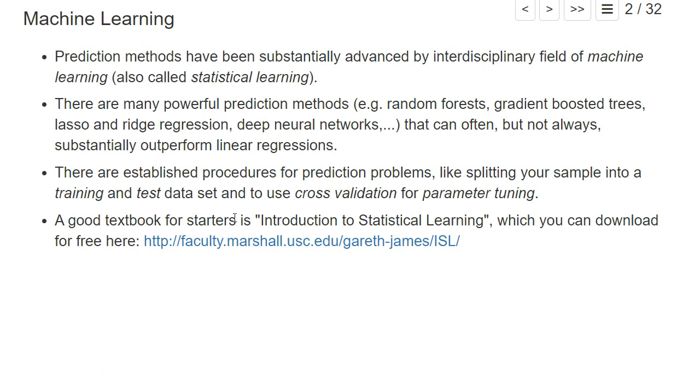Machine learning not only developed these methods but also established clear procedures for tackling prediction problems. For example, you would typically split your sample into a training and test data set, estimate your model on the training data set, and assess prediction accuracy on the test data set. There's also hyperparameter tuning, for which you can use methods like cross-validation, which we will look at in this chapter.